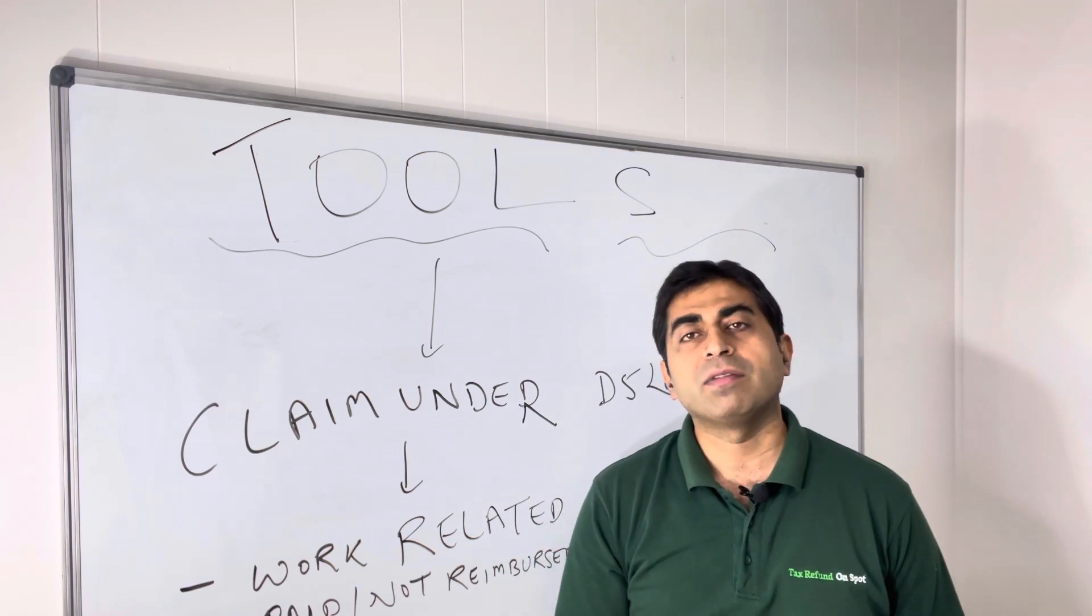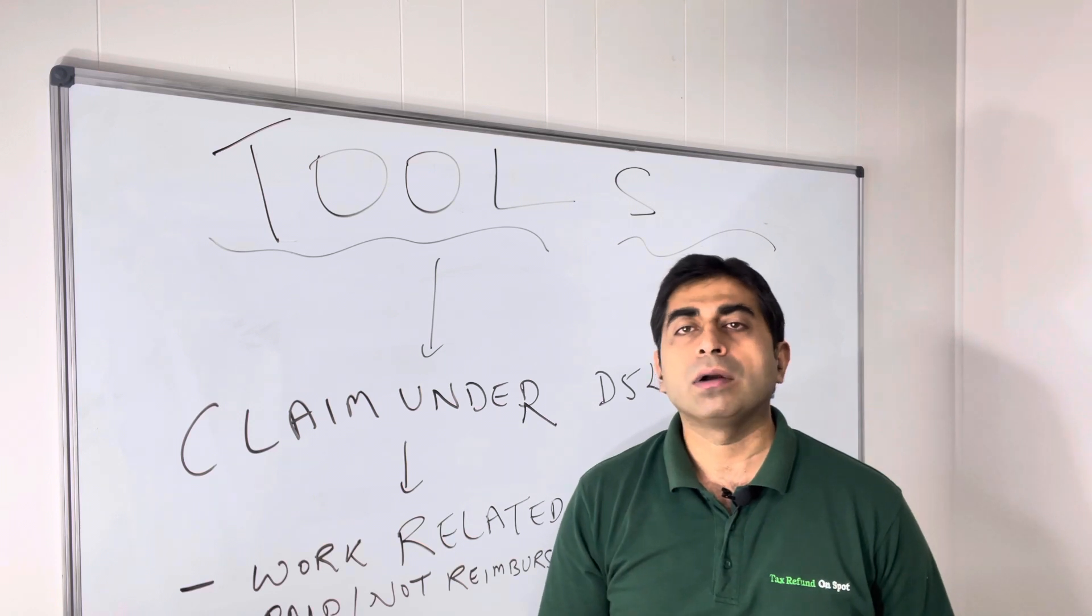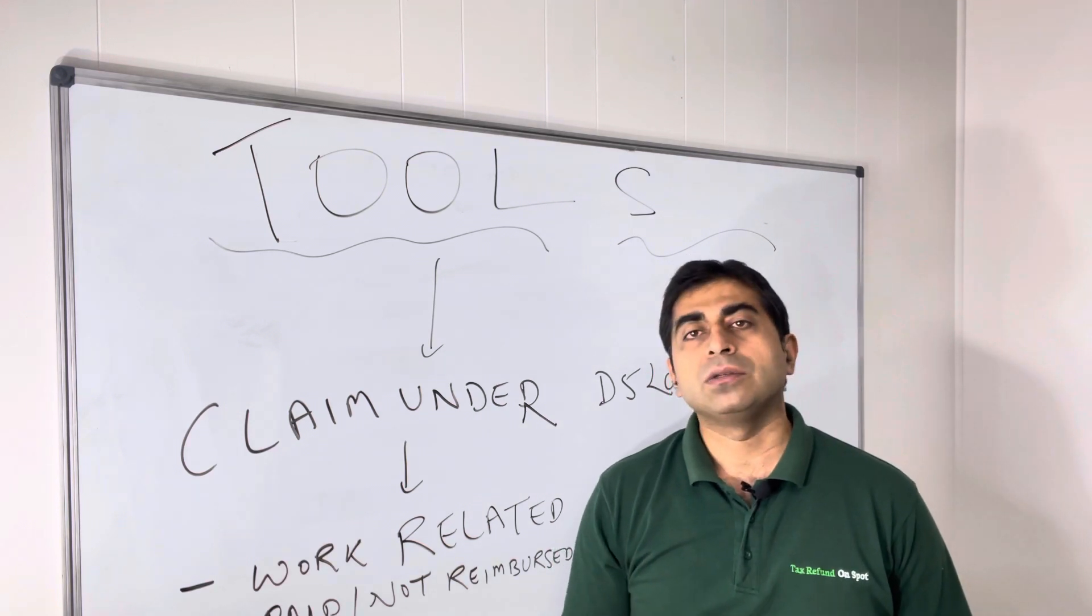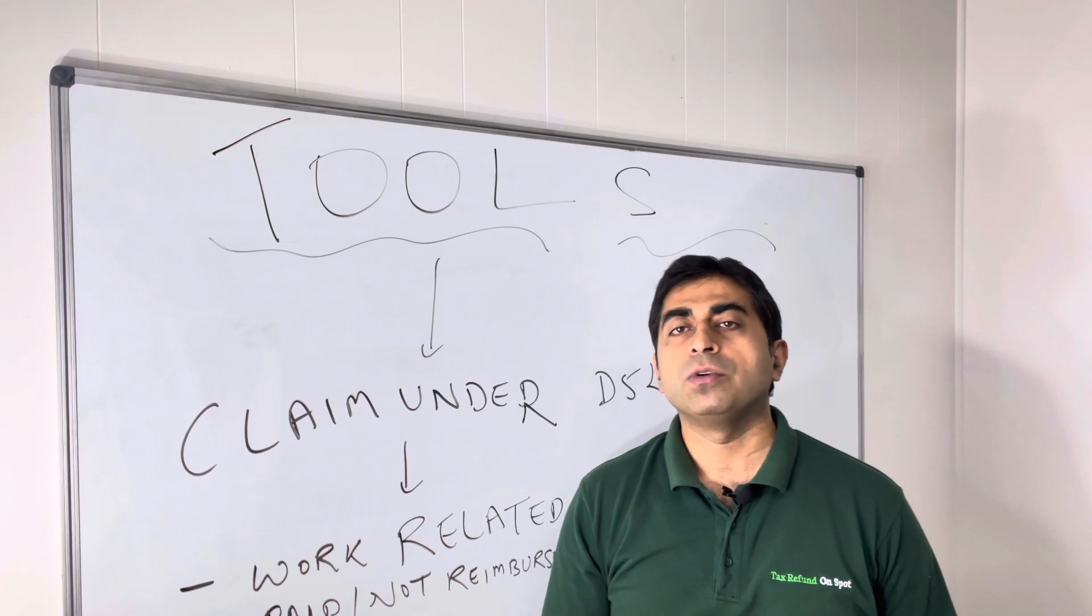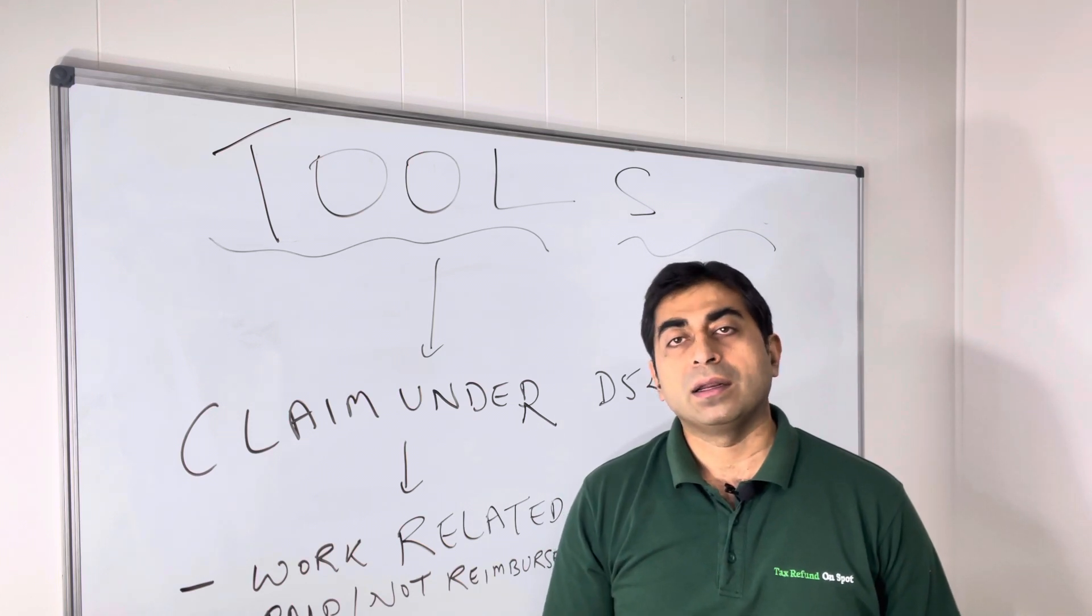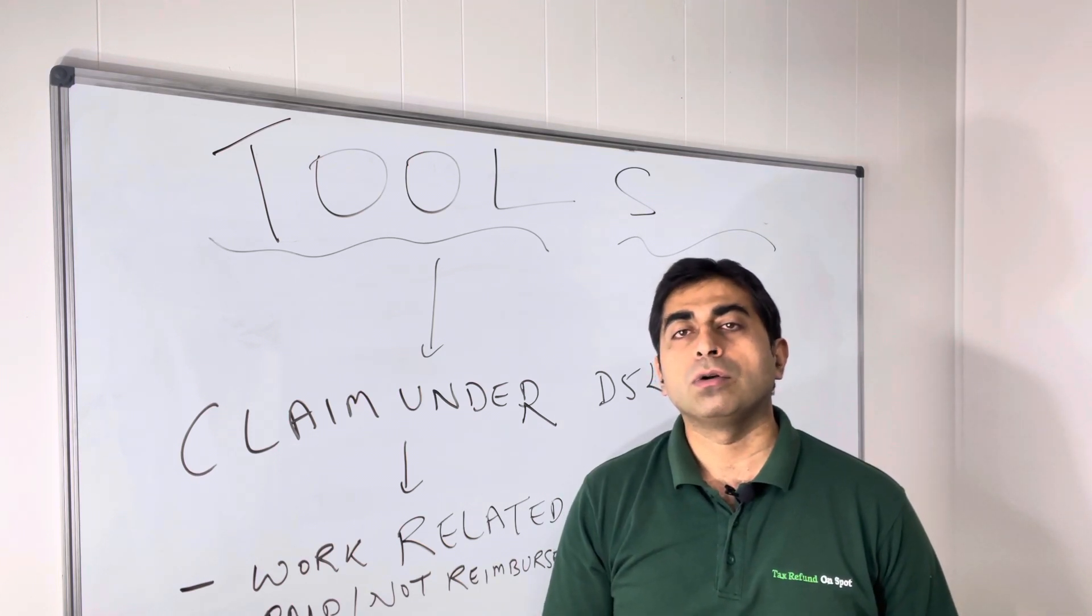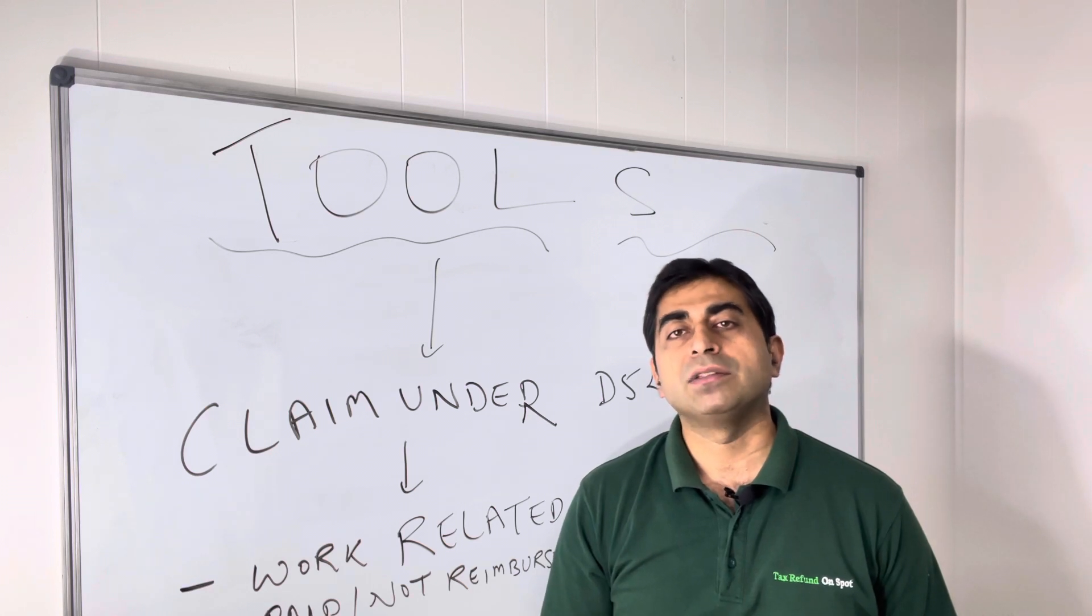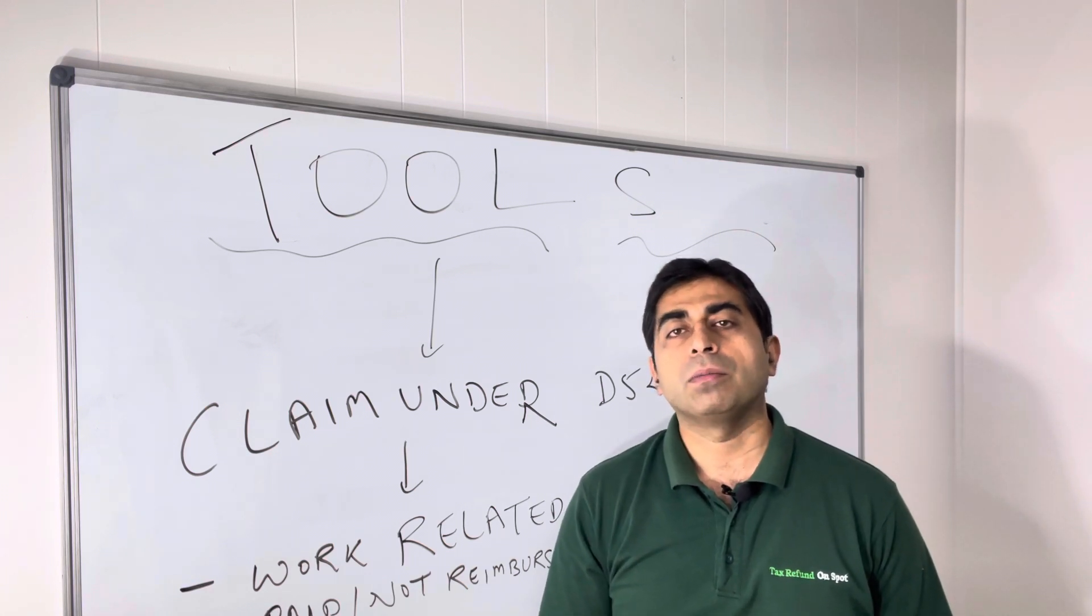And the third is you should have a receipt or an invoice showing what tools you have bought. It should clearly show what tools you have bought so that it matches with your description of work - what job you're doing, it should match with that.